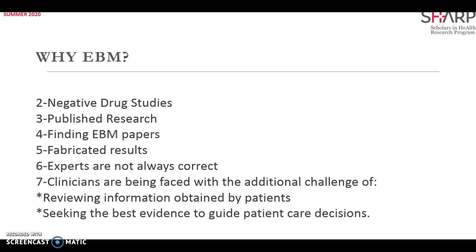Are experts always correct? Sometimes experts give advice lacking evidence, and it proves to be harmful. For example, the beneficial effects of prenatal steroids given to mothers at risk of delivering prematurely — to decrease the risk of neonatal respiratory distress syndrome — were first reported in the 1960s. By 1982, there were enough RCTs supporting this beneficial effect, yet in the mid-1980s an expert did a narrative review and warned against the use of steroids. He did not do a systematic review. In 1989, a systematic review was done on all trials and concluded it was actually beneficial to give steroids.